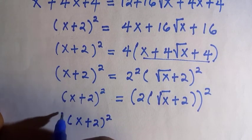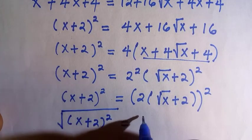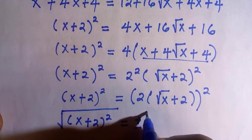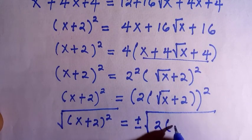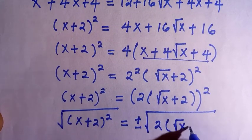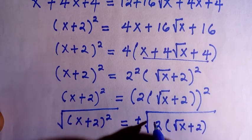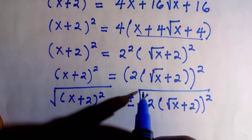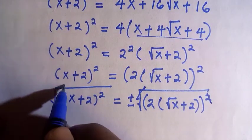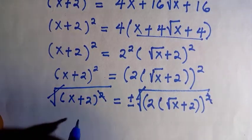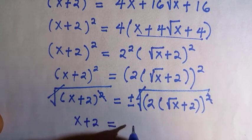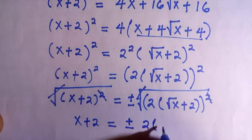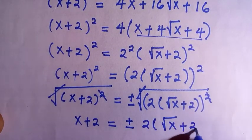We know that when taking the square root of the right-hand side, we introduce plus or minus, and we have 2(√x + 2). If square and square root cancel each other, we have x + 2 equals plus or minus 2(√x + 2).